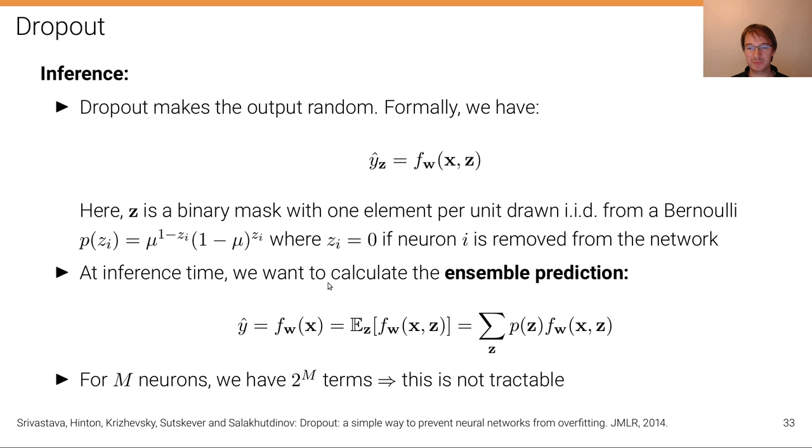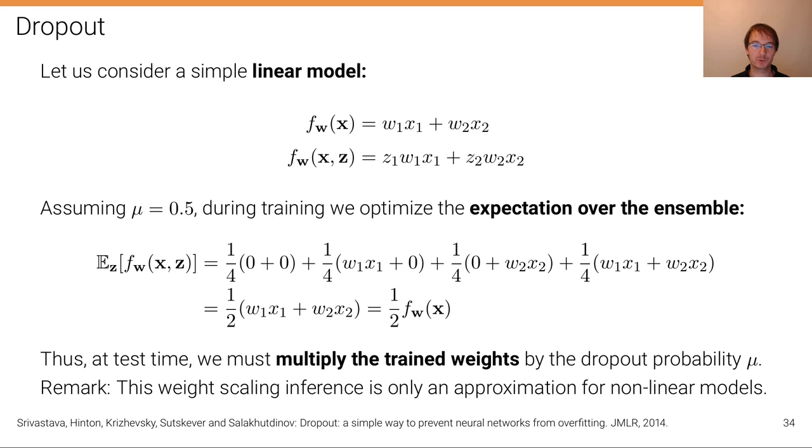So what do we do? Let's consider a simple linear model, which you can think of also as one layer in a neural network, a fine layer. So the linear model can be written as such a linear model with two inputs, two weights that produces an output f_w(x).